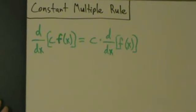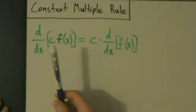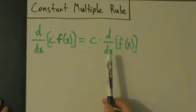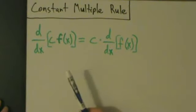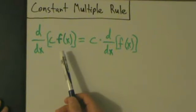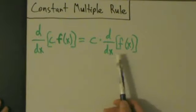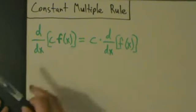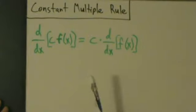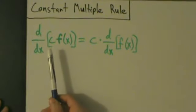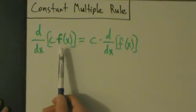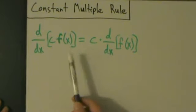Now we're going to talk about the constant multiple rule. This says that d/dx of c times f(x) equals c times d/dx of f(x). f(x) is any function that is differentiable — in other words, you can take the derivative, otherwise this doesn't make sense. And c represents any constant. So it pretty much just says that if you're taking the derivative of a constant times a function, then you can just pull the constant out.